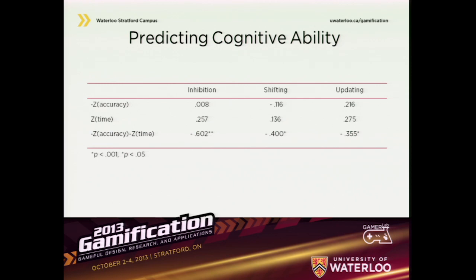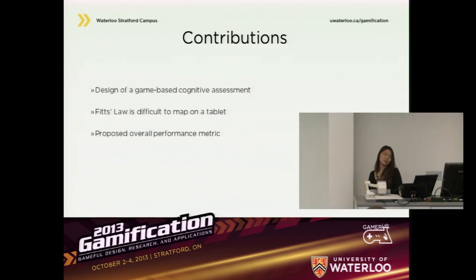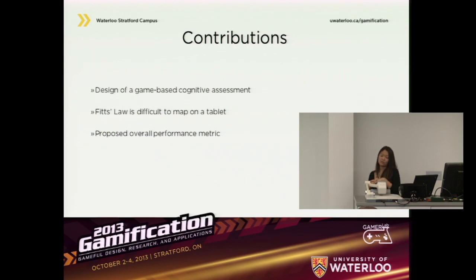If we put this game in front of patients, we can hopefully get a better picture of what's going on inside their central executives. We are now conducting clinical studies on elderly patients — looking at them post-operatively to see the effect of analgesics after an operation on their cognitive properties, looking at adults waiting in an emergency department, and looking at patients that have just received neuro-rehab to see how their cognitive status changes before and after. The contributions of this work include designing a game-based cognitive assessment, demonstrating that Fitts' Law is difficult to apply on a tablet, and proposing a new overall performance metric.